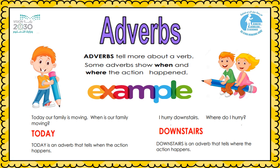Now, adverbs tell more about the verbs. An adverb is a word that describes the verb — it describes the action. We have two questions to ask to find out where the adverb is. First, read the sentence and find the verb, then ask: where did this happen? Or when did this happen? Adverbs use the question words when and where.